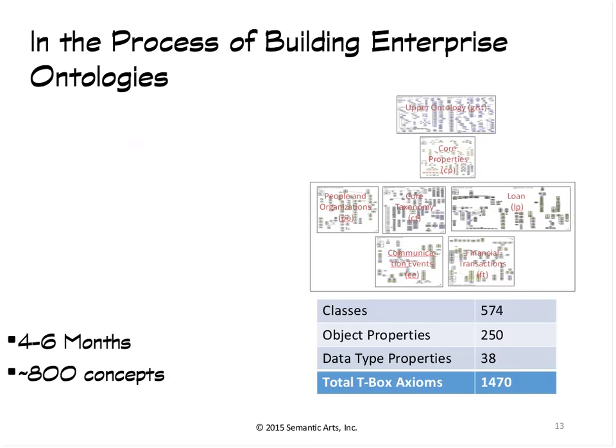We used to build enterprise ontologies, and it typically would take four to six months, during which we might come up with somewhere around 800 concepts. When I say it's considerably simpler than what we were dealing with, it is — typically this is a map of a set of systems that collectively have tens of thousands or usually hundreds of thousands of attributes. Obviously, all applications sometimes have some peculiar local things that don't need to be shared, but for the most part we were shooting for that level of sharing.